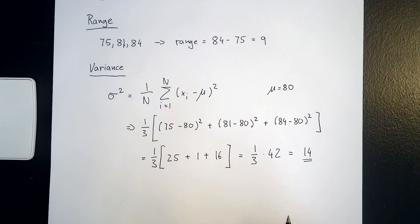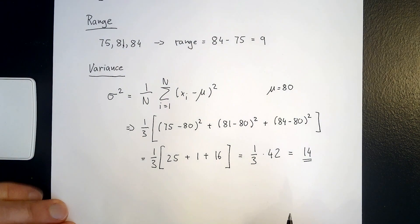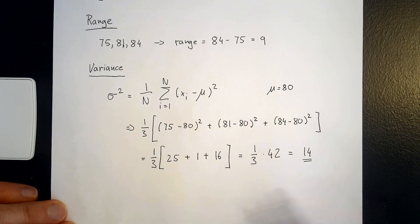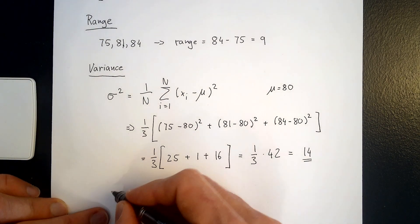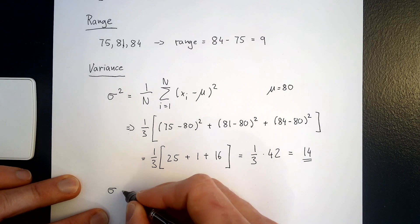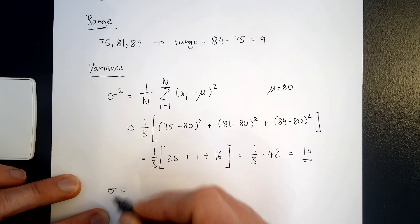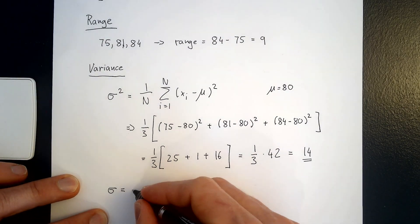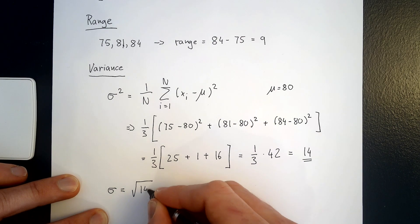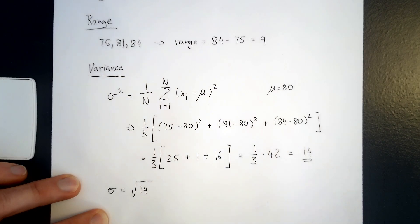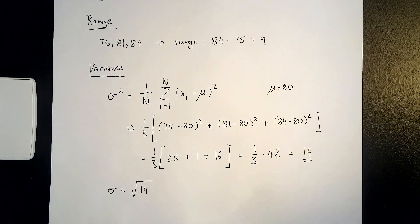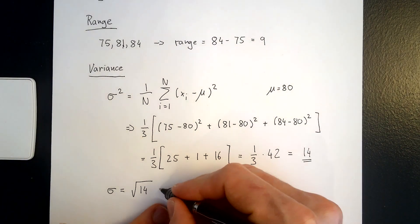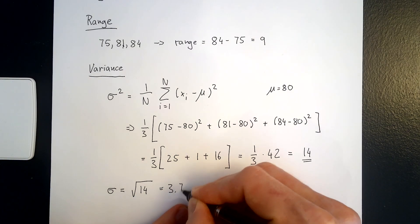The standard deviation is simply the square root of the variance. So σ without the squared is simply the square root of 14, which is equal to 3.74.